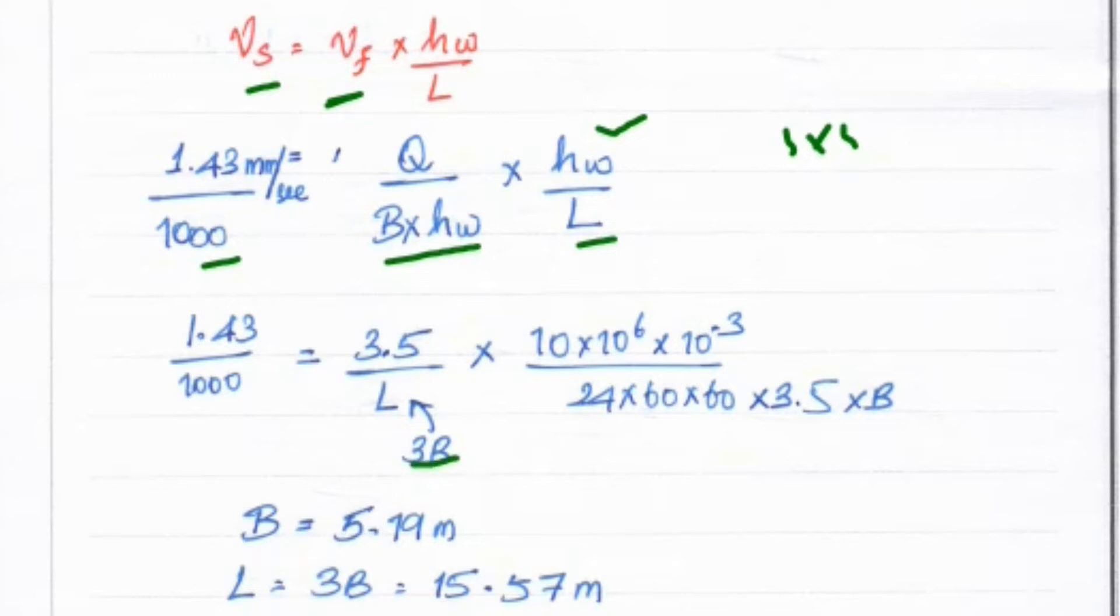So 1.43/1000 = 3.5/L, where L = 3B × B. The quantity is 10 million liters per day. We convert to liters per second: 10 × 10⁶ × 10⁻³ divided by...